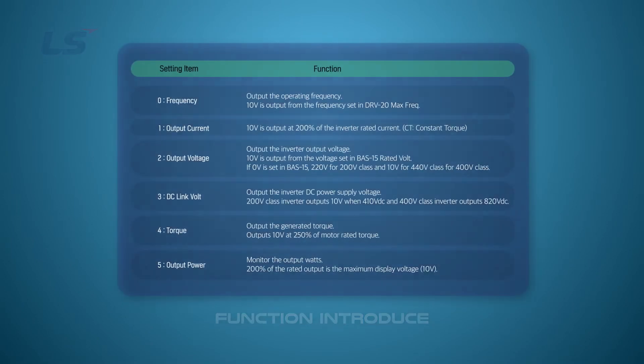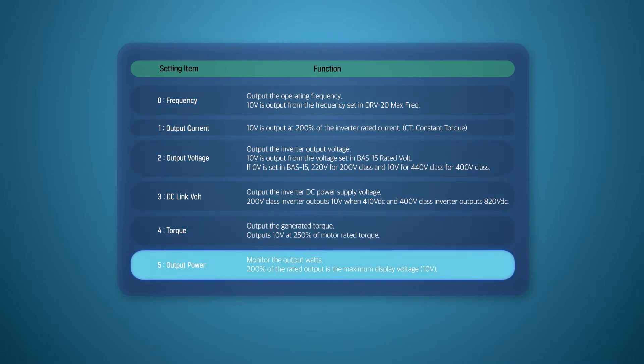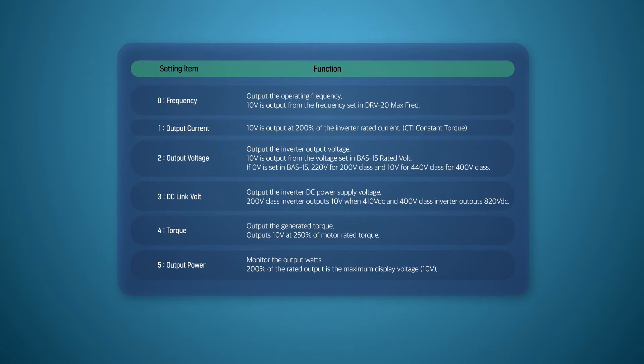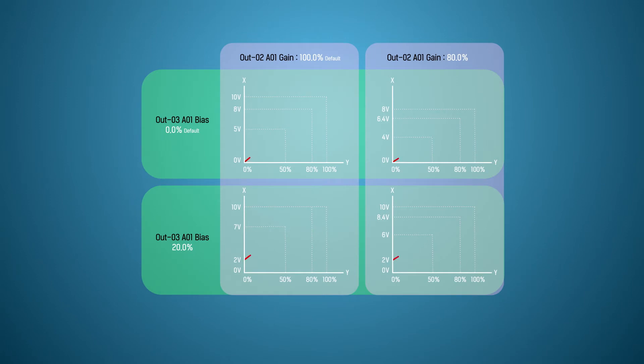The analog output is the same. The multifunctional analog output terminals, such as the AO1 and AO2 terminals, allow drive operation information, such as output frequency and output current, to be converted to voltage or current. You can also resize the actual output voltage or current according to the output value.